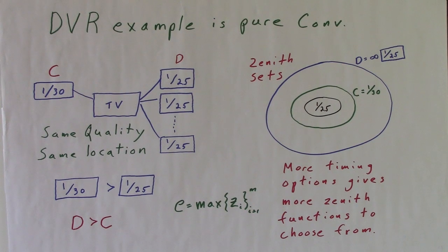Individually, a DVR with 30 hours of capacity and one tuner has more timing options than a 25 hour one tuner DVR. That makes the 30 hour DVR more convenient.